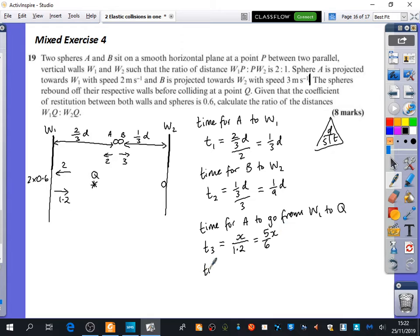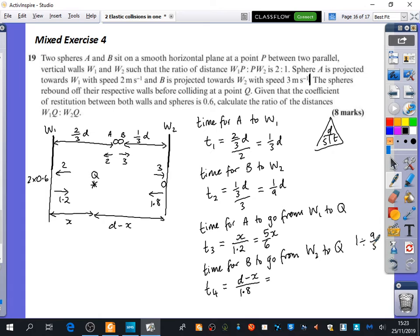Okay? I'm now going to do the time for B to go from wall 2 to Q. This is the part that's going to be interesting. This distance was X. What's this distance? D minus X. So we can say that time 4 is going to be D minus X divided by its speed. Well, it came in at 3. So what will it be bouncing back at? 1.8. So we're going to do that divided by 1.8. 1 divided by 1.8 is 5 over 9. Well, it's 1 divided by 9 over 5. So it's 5 over 9. Stop me if there's any bits you want me to clarify what's happening. So we get 9 over 5, D minus X.